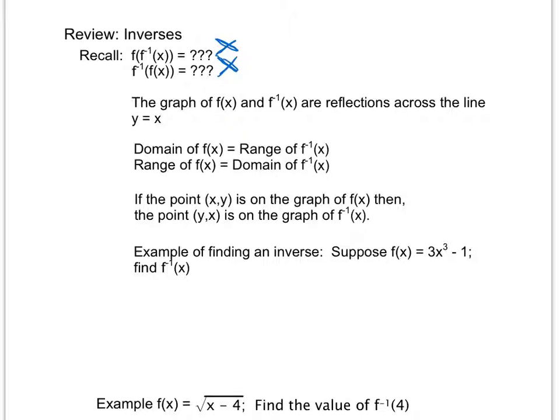A couple things to remember about inverses is, other than the fact that they undo one another, is that the graph of f(x) and the graph of f inverse of x are reflections of one another across the line y equals x. Remember the line y equals x is just a straight linear line with a y-intercept of 0 and a slope of 1.